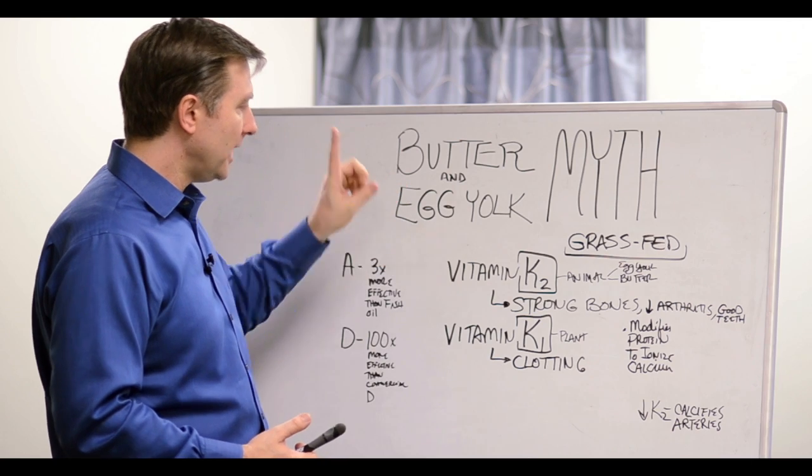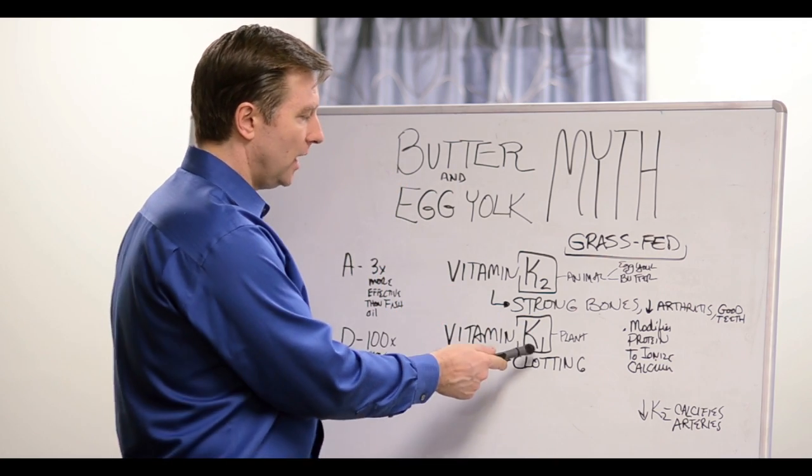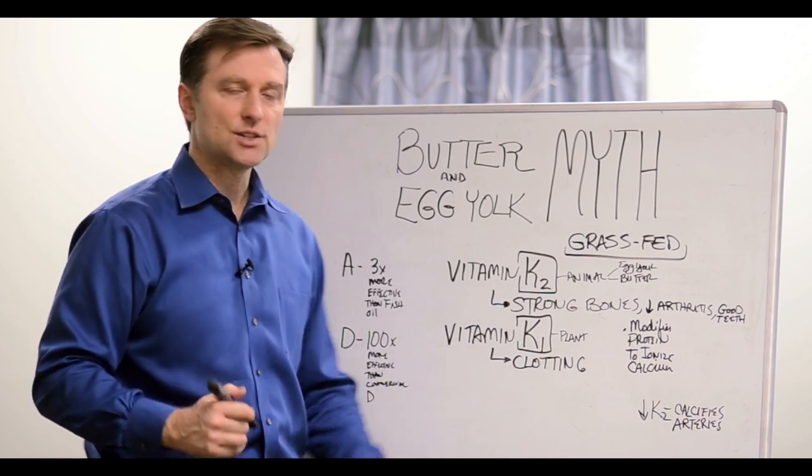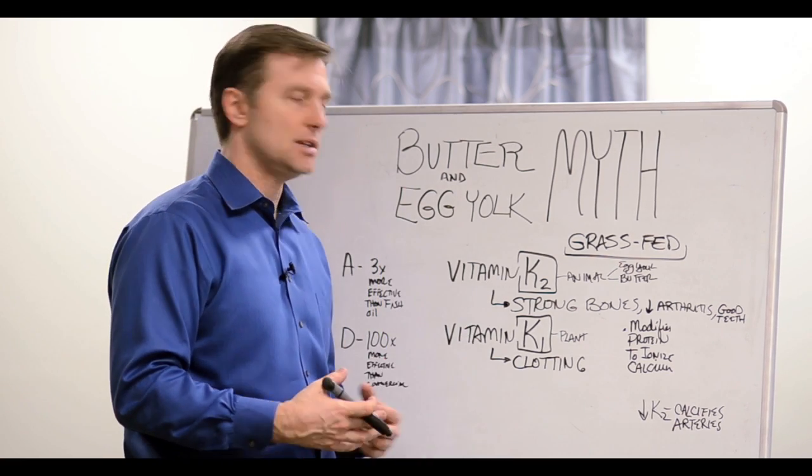Now, there is a vitamin, vitamin K, that has two different versions. You have vitamin K1 and vitamin K2. Vitamin K1 is from plant sources and that actually helps you clot. And that's a good thing because if you didn't have this, you would bleed internally.